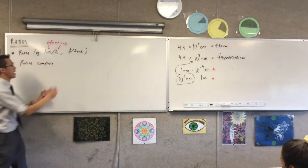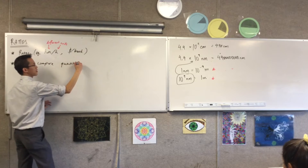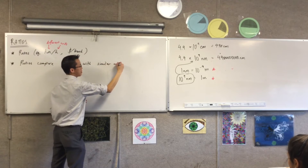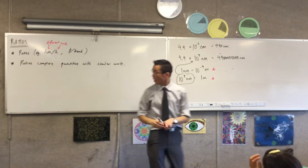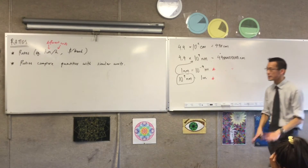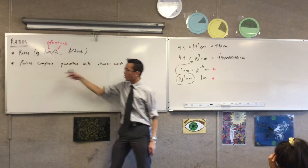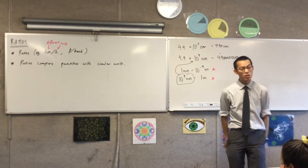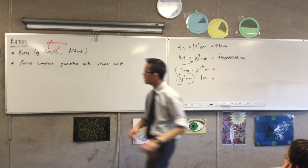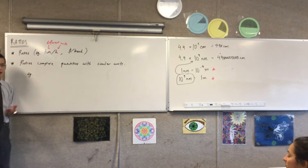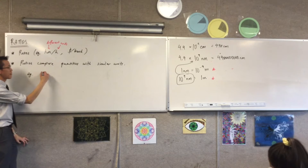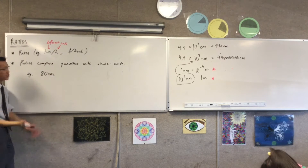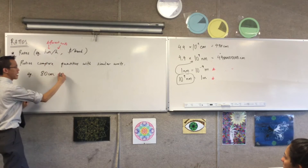They're of the same style. So ratios compare quantities with similar — and I'll explain why I say similar rather than the same in a second. Rates are about comparing quantities in completely different units, qualitatively different. Whereas ratios — I've still got two different things, but the two different things are measured in similar units. So here's an example. The typical symbol for a ratio, as opposed to a rate which uses a slash, is a colon.